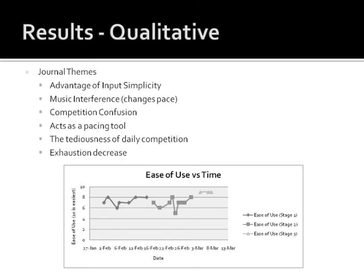After performing qualitative analysis on my journal entries, I came up with six major themes. My journal entries suggested that there was a distinct advantage to the simplicity of Run Meter. Since Run Meter required very little user input, I never tired of using the application. During my runs, I used the iPod capabilities of the iPhone to listen to music. However, my journal entries documented how I felt my pace was being influenced by the tempo and intensity of the music. Many times the auditory competition that Run Meter provided confused me — one minute I would be ahead of my best time, and then the next minute I would be behind by a large margin. These confusing messages made me very apprehensive about using the competitive announcements.